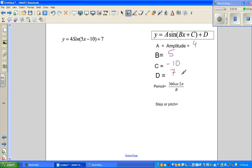This D tells you the baseline. Now period is 360 or 2π divided by B. We are going to do this in degrees, so I will ignore the 2π. This is 360 divided by 5, and 360 divided by 5 is the same as 720 divided by 10, which is 72. So the period is 72.